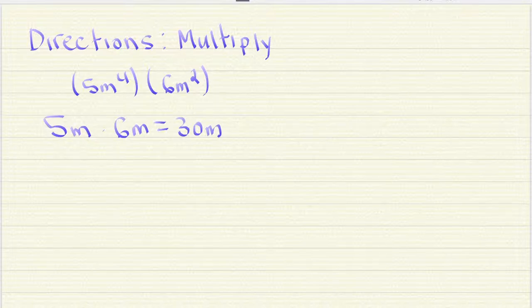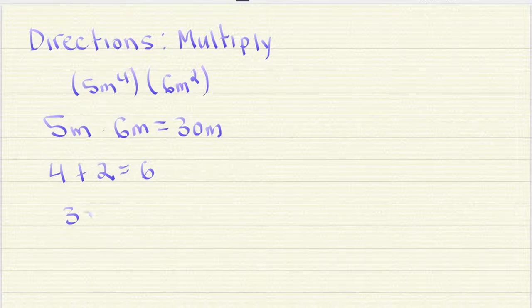The second thing that we need to do is add the exponents, 4 plus 2. So our final answer will be 30m to the 6th power.